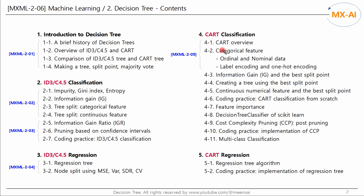This is the sixth session of Decision Tree. In the last video, we looked at the outline of CART and how to handle categorical features. We discussed how to handle ordinal and nominal data, label encoding, and one-hot encoding methods.